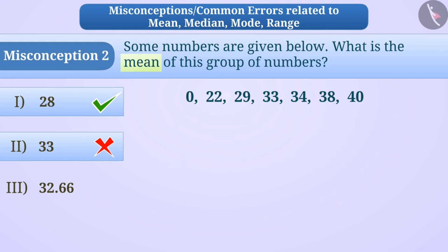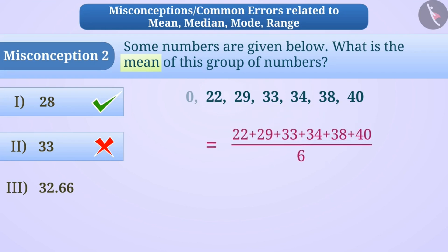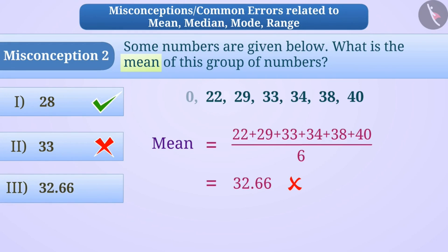While calculating mean, some children ignore observation 0. They think they only need the mean of the other 6 observations and divide by 6, which gives them 32.66 — this is a wrong answer. Option 3 will therefore be the wrong answer.